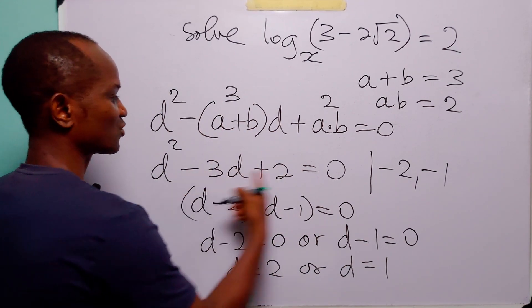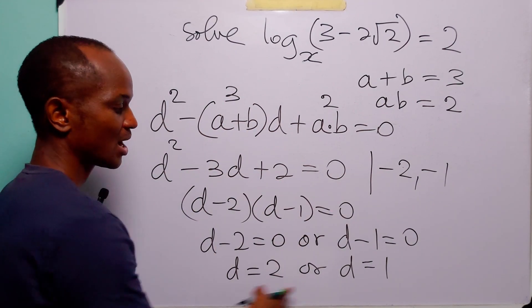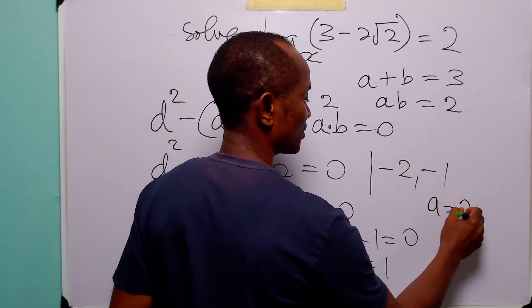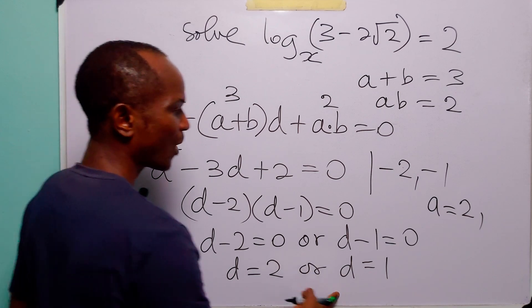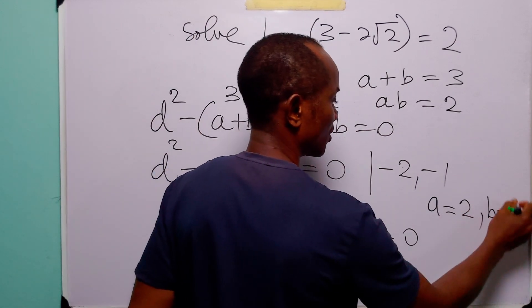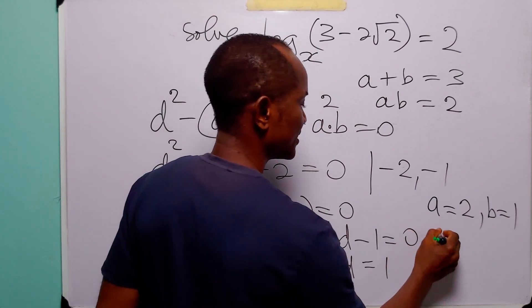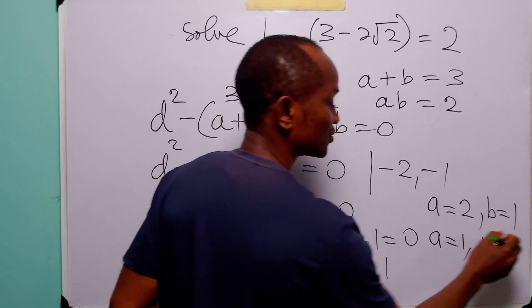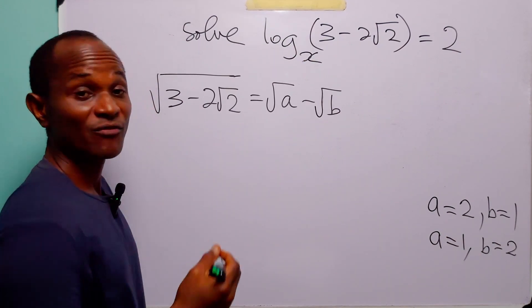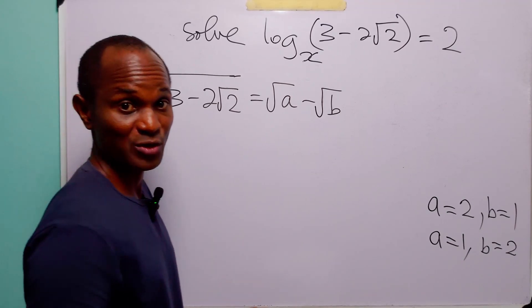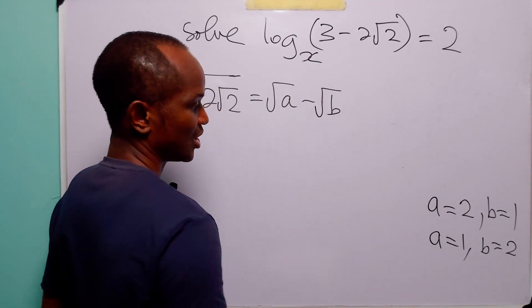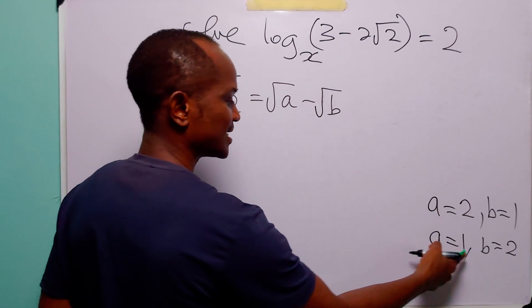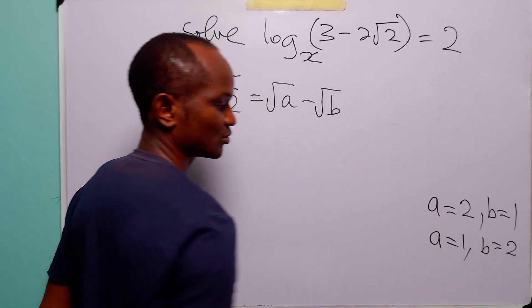From here we have d equals 2 or d equals 1. The roots of this quadratic equation are 2 and 1, which simply means that a equals 2 when b equals 1, or a equals 1 when b equals 2. So we have two sets of results: when a equals 2, b equals 1; and when a equals 1, b equals 2.